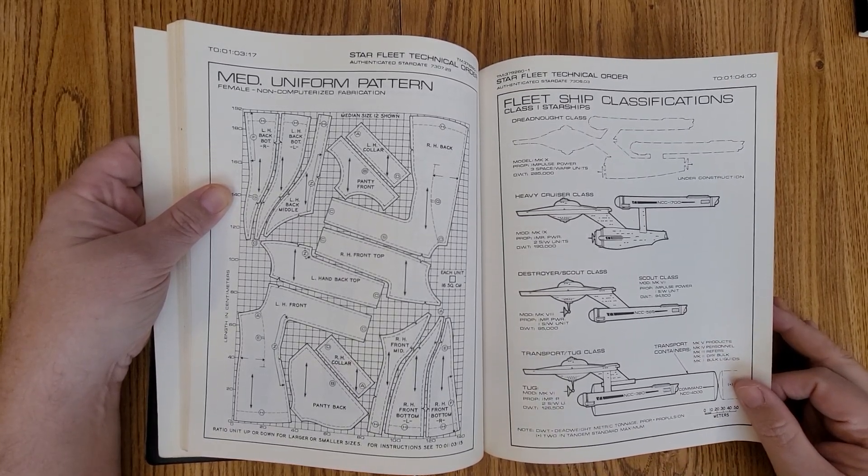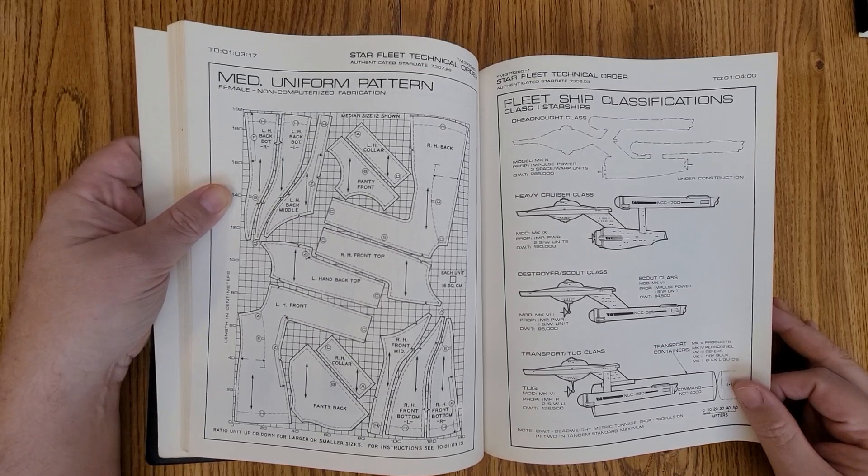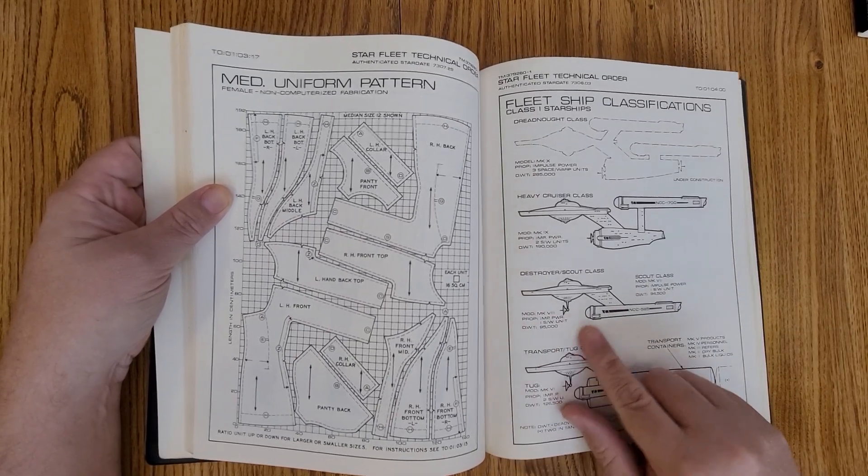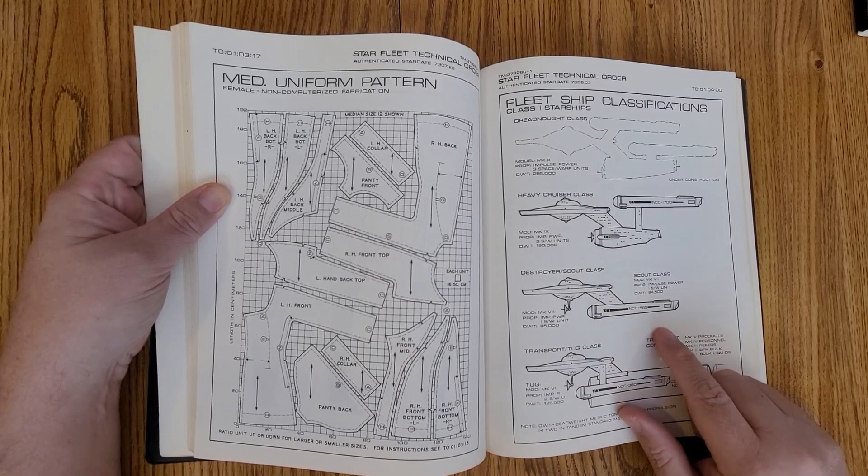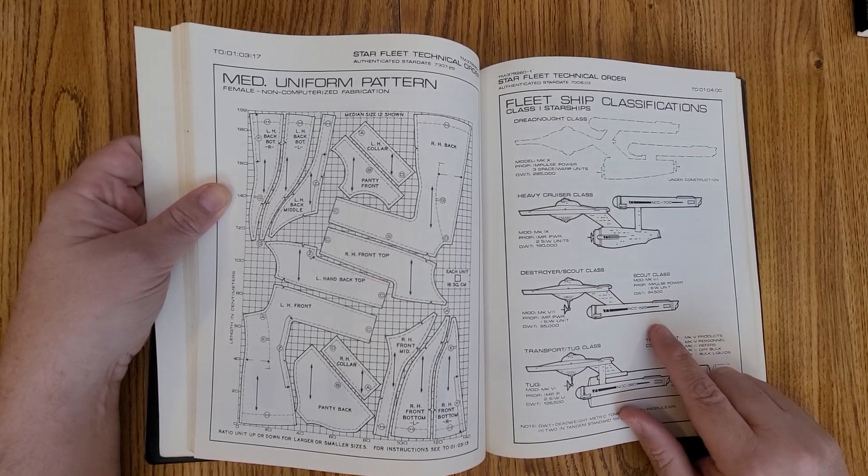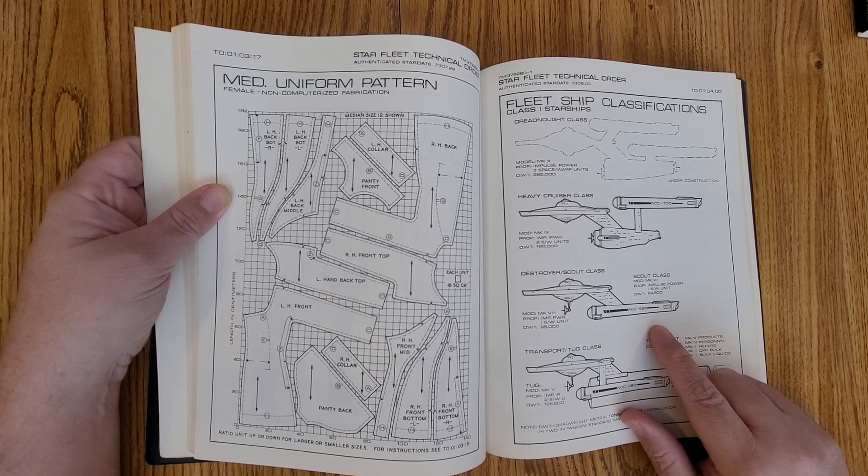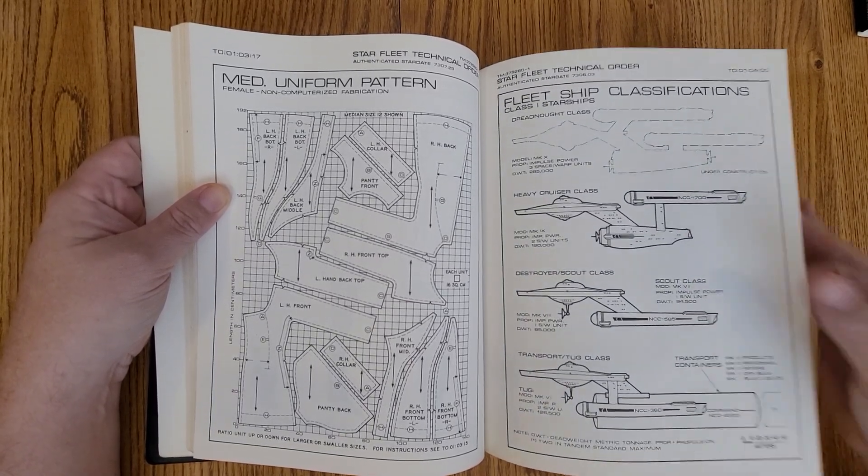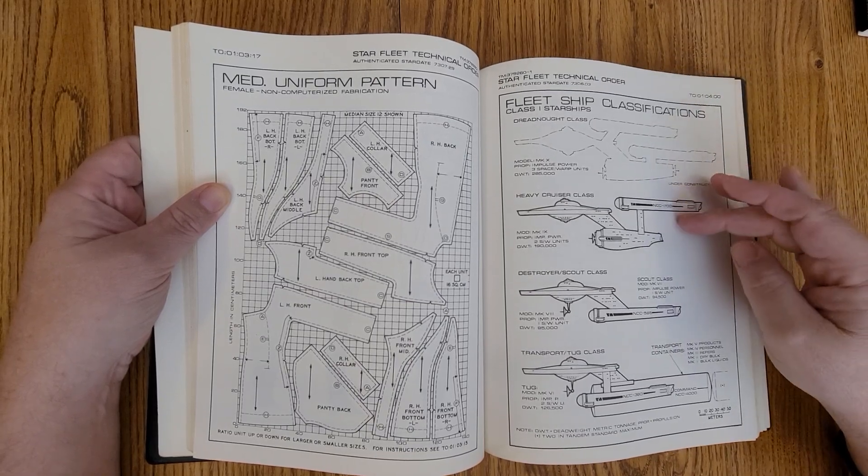But I always held true to Roddenberry's formulas of having two warp nacelles and things. One of my favorite ships really is the Destroyer class, which is like Saladin, but it didn't ever fit the rules. But what was cool was there's the heavy cruiser class, which is predominantly what we saw in Star Trek, the original series.